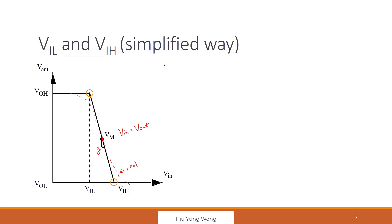First of all, I know that just draw a triangle, just use the ratio, right? The slope, I know that Voh minus Vm, which is talking about this one, Voh minus Vm, right? Divide it by VIL minus Vm.